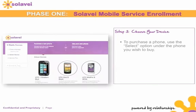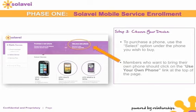Step three is to choose your device. To purchase a phone, use the 'Select' option under the phone you wish to buy. For those of you who want to bring your own phone, click the 'Use Your Own Phone' link at the top of the page.